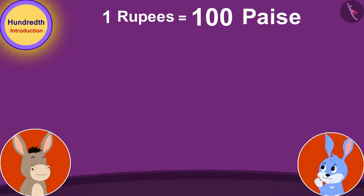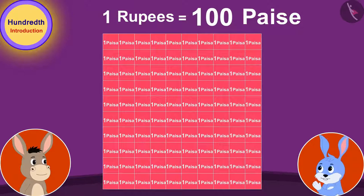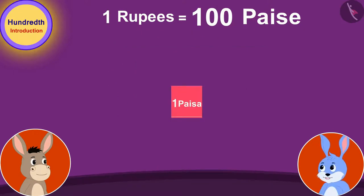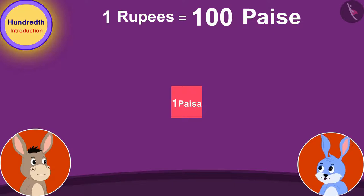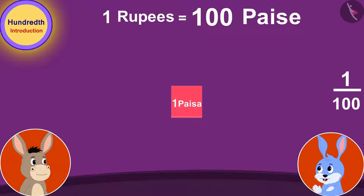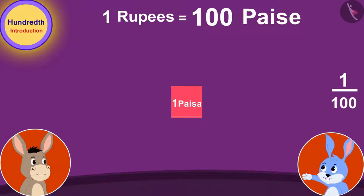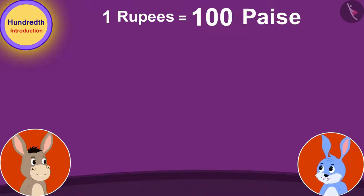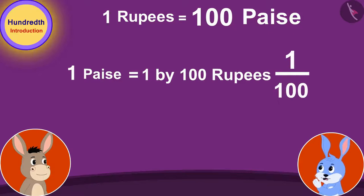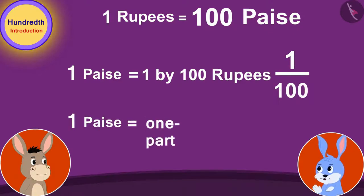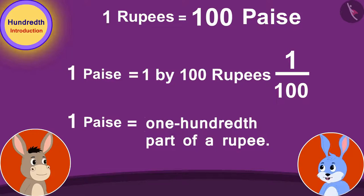Suppose we represent one hundred paise by making a hundred squares. Then one square would be equal to one paise. If we take one of these hundred squares, we can write it in the form of a fraction as one by hundred. Therefore, one paise is one by hundred, or one hundredth part of a rupee.